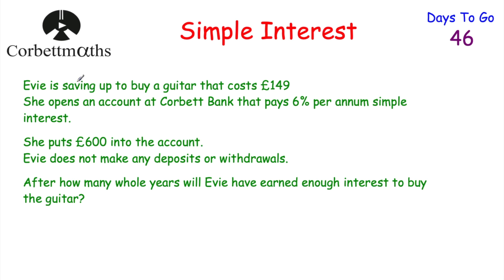Let's have a look at our last simple interest question — this is a problem-solving question. We're told that Evie is saving up to buy a guitar that costs £149. She opens an account at Corbett Bank that pays 6% per annum simple interest. She puts £600 into the account and doesn't make any deposits or withdrawals. The question asks: after how many whole years will Evie have earned enough interest to buy the guitar? She wants to buy the guitar just using the interest. Feel free to press pause and work this out now. She earns 6% per annum simple interest on £600, so let's work out what 6% of £600 is — that's how much interest she'll earn every single year.